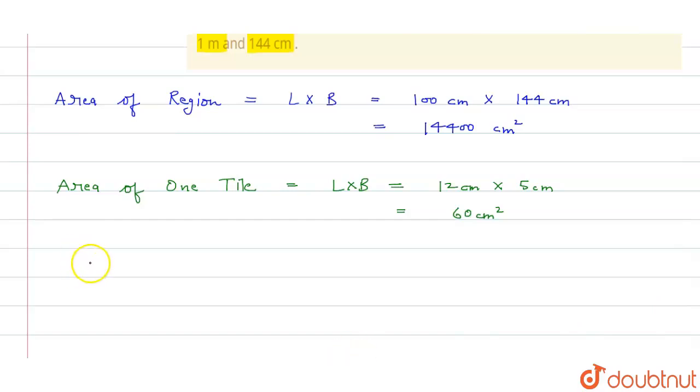Now we can find the number of tiles. That is equals to the area of region upon the area of one tile, and that will equals to 14,400 square cm upon 60 square cm, and the answer will come to 240. So we can say that 240 tiles are needed, and that is our answer.